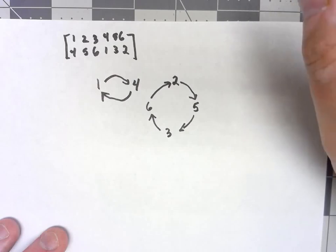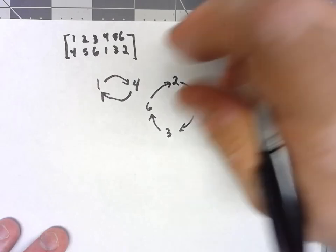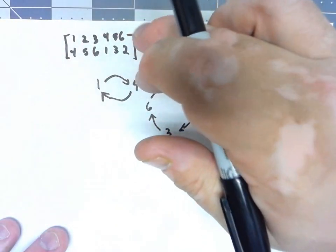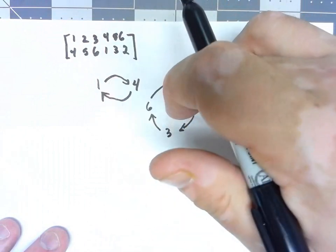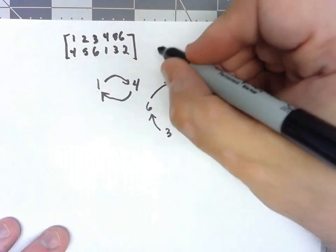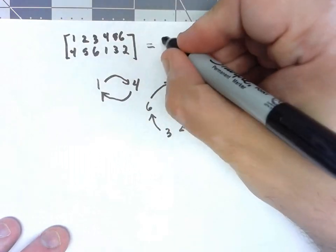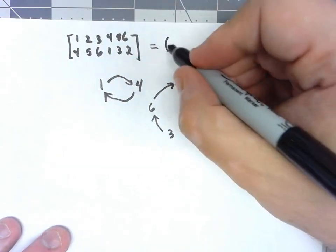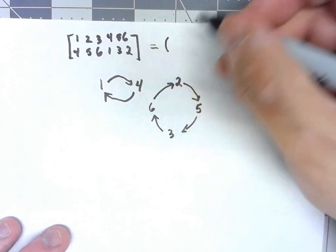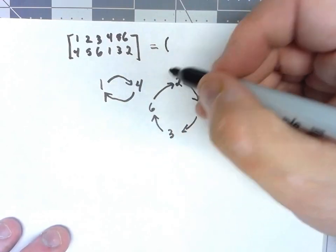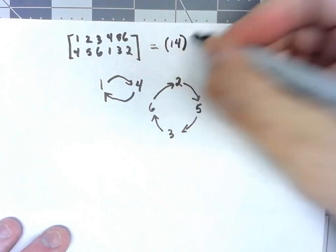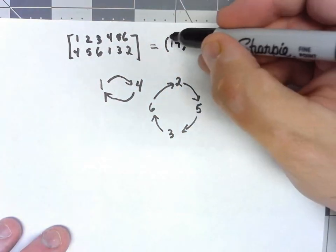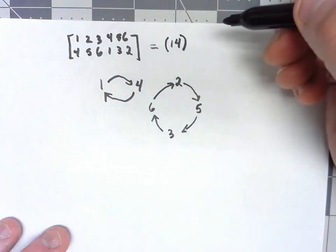So we can go ahead and represent this permutation by telling what these cycles are. And the way we do that is very simple. We're just going to use parentheses, and inside that parentheses, we're going to say what these cycles are. So 1 and 4, we'll write like that. 1 goes to 4, 4 goes to 1.